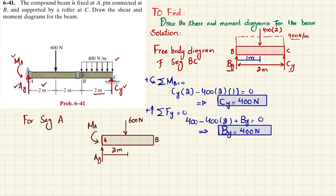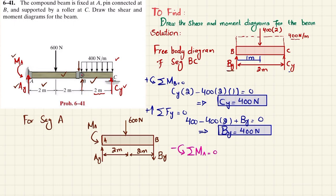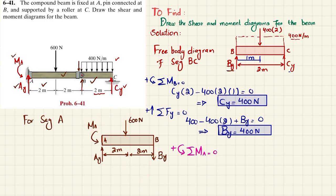At point B on segment AB, BY acts downward — by Newton's third law, since BY was taken upward on segment BC, it acts downward on segment AB. The distance between the 600 Newton load and BY is 2 meters. Applying the sum of moments about point A equals zero, taking counterclockwise as positive: MA minus 600 times 2 minus BY times 4 equals zero. With BY equal to 400, this gives MA minus 1200 minus 1600 equals zero.